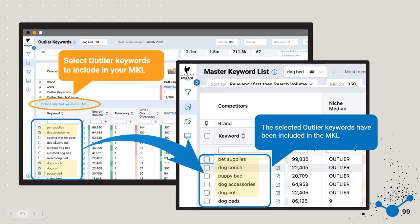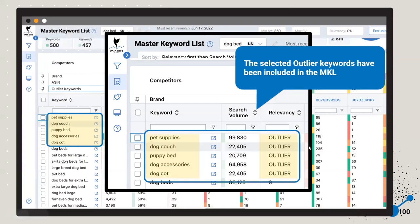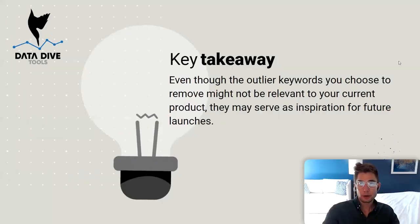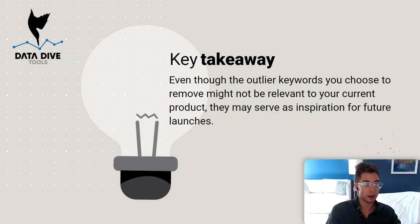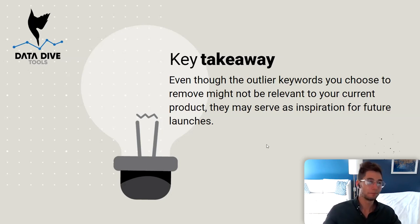When you go through the MKL and want to incorporate outlier keywords like 'pet supplies,' 'dog accessories,' 'dog couch,' you can manually click the checkboxes, the banner will pop up, and clicking that button will take these outlier keywords and add them back into your MKL. Even if you go through the outlier keywords list and remove something not relevant to your current product, a lot of sellers find this really helpful for getting inspiration for future launches — you might not be selling that pink dog bed now, but it might be getting enough search traffic.